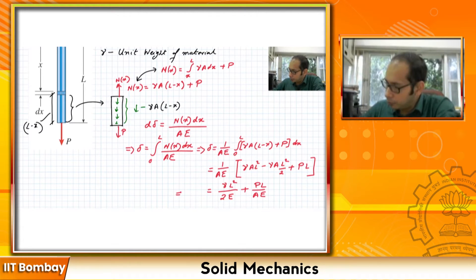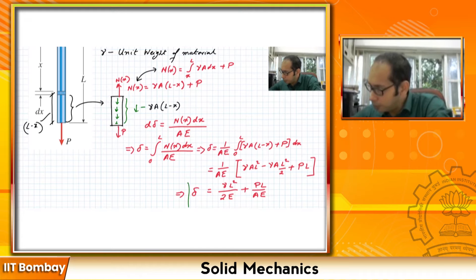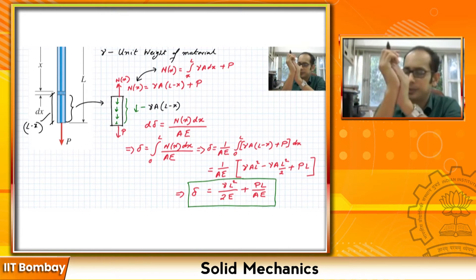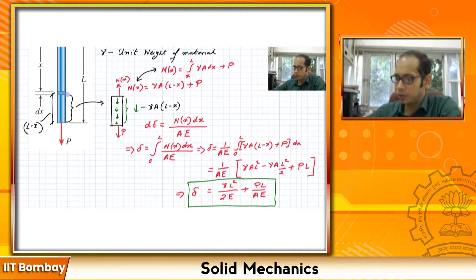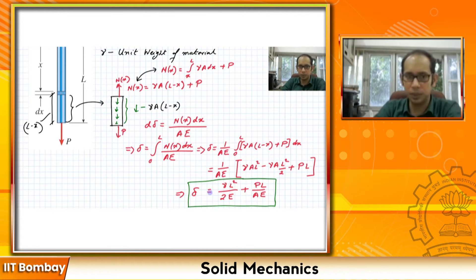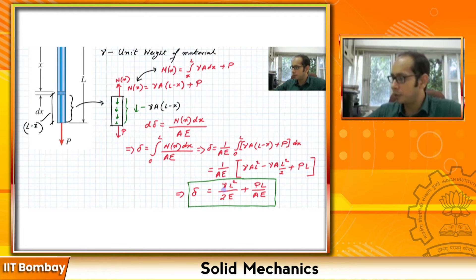This is the final answer. Let's introspect: everything is a positive quantity, which makes sense — in addition to the load P, the self-weight gives additional deflection. If the bar was weightless, gamma is zero and the formula reduces to PL/AE, exactly what we had learned. So that checks out. Since the bar has self-weight, we get this additional deflection on top of PL/AE.